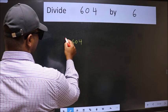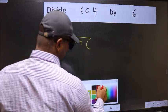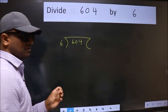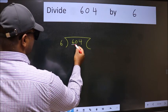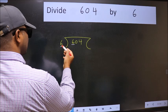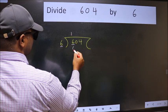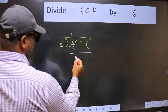604 here, 6 here. This is your step 1. Next. Here we have 6 and here 6. When do we get 6 in 6 table? 6 once 6. Now we should subtract. We get 0.